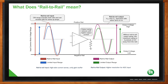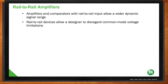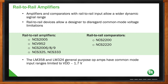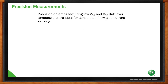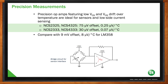So what rail-to-rail amplifiers do you have? For both amplifiers and comparators, we have a very strong offering. Some recent devices include the NCS2005, the NCS200689, and the comparator NCS2200. The newest op amp we've released is the NCS333, which is a zero-drift amplifier. Zero-drift is one of those calibration techniques you can implement on a CMOS amplifier easily. It basically helps keep the offset voltage as well as the offset drift low over time and temperature.